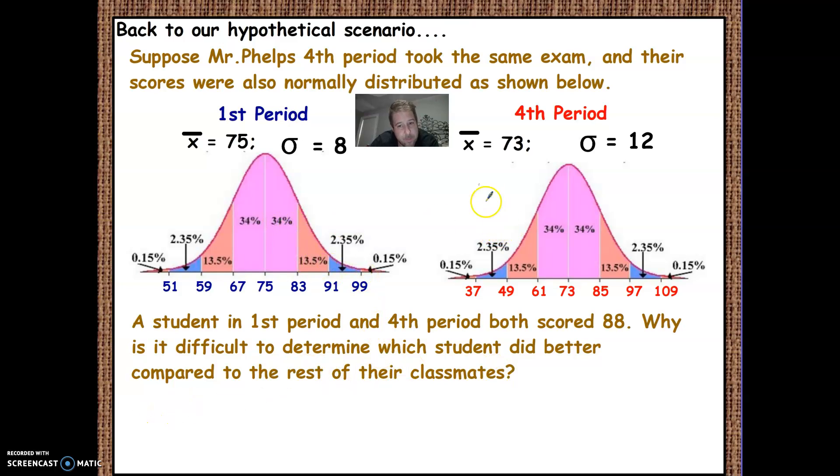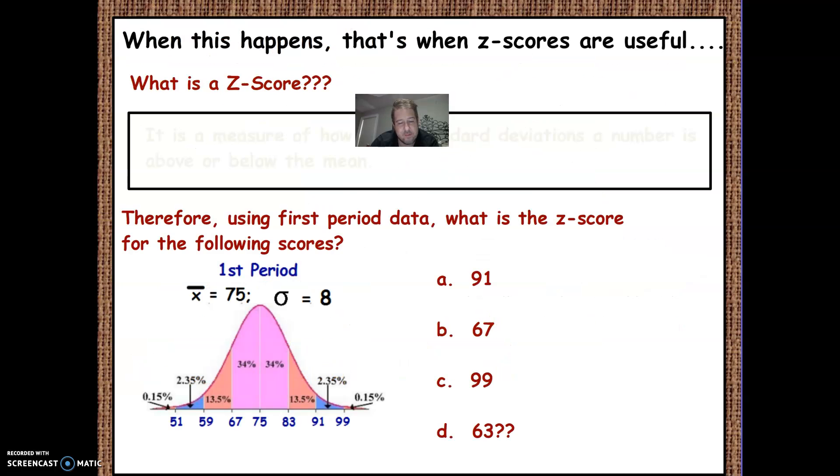Now, if they got the same score, we can see 88 is above this. This is a lower mean than this, but also has a higher deviation. So that's what makes it tough to compare. So we want to know, how do we know which class they did better in? And that brings us to the idea of Z scores.